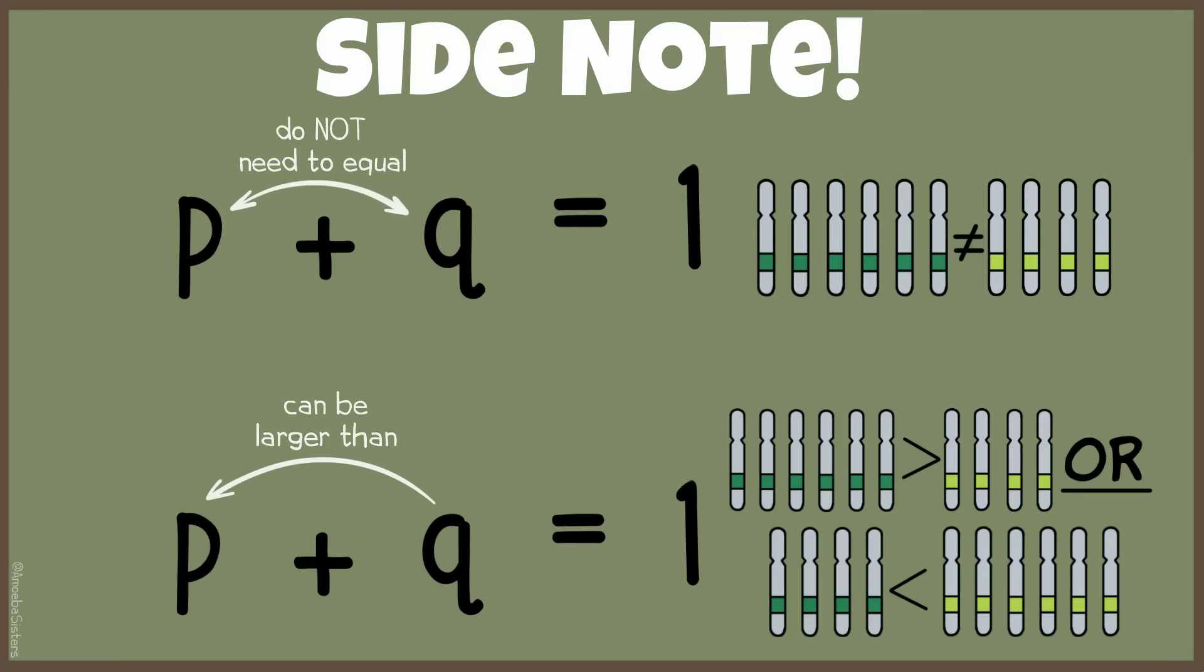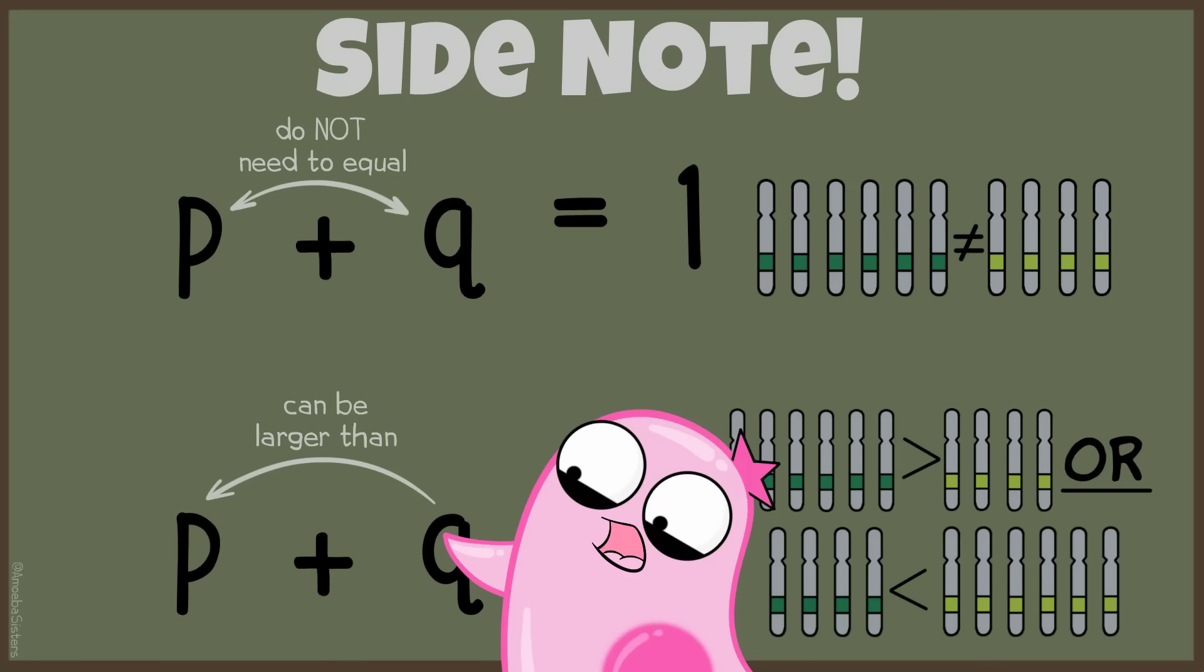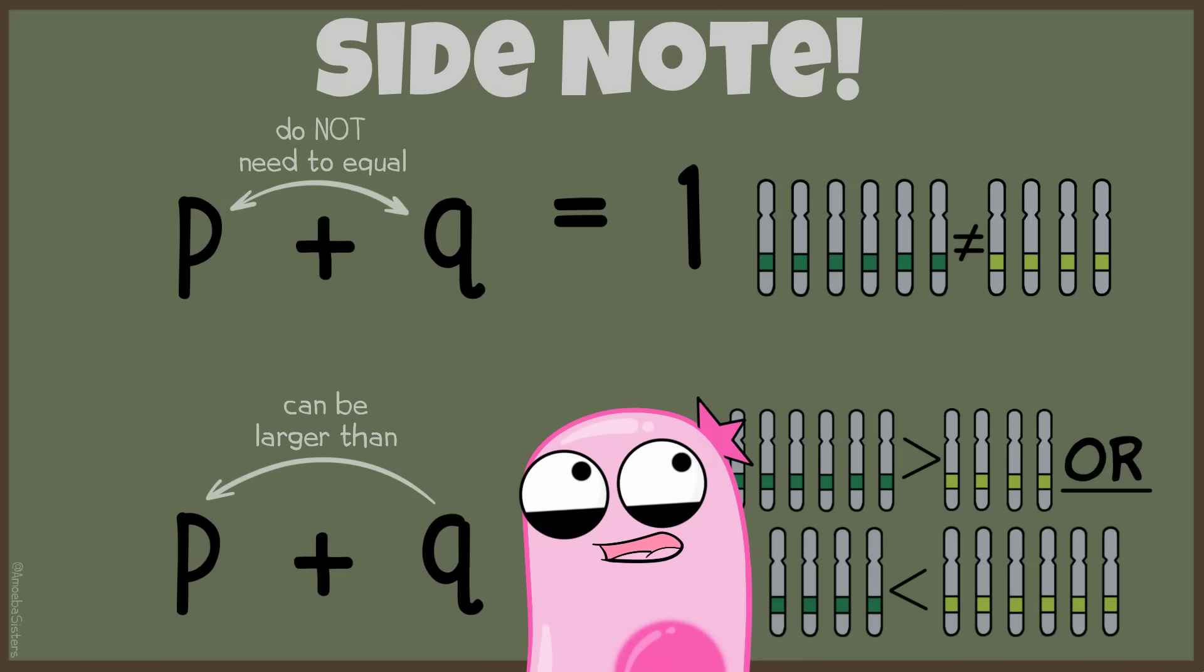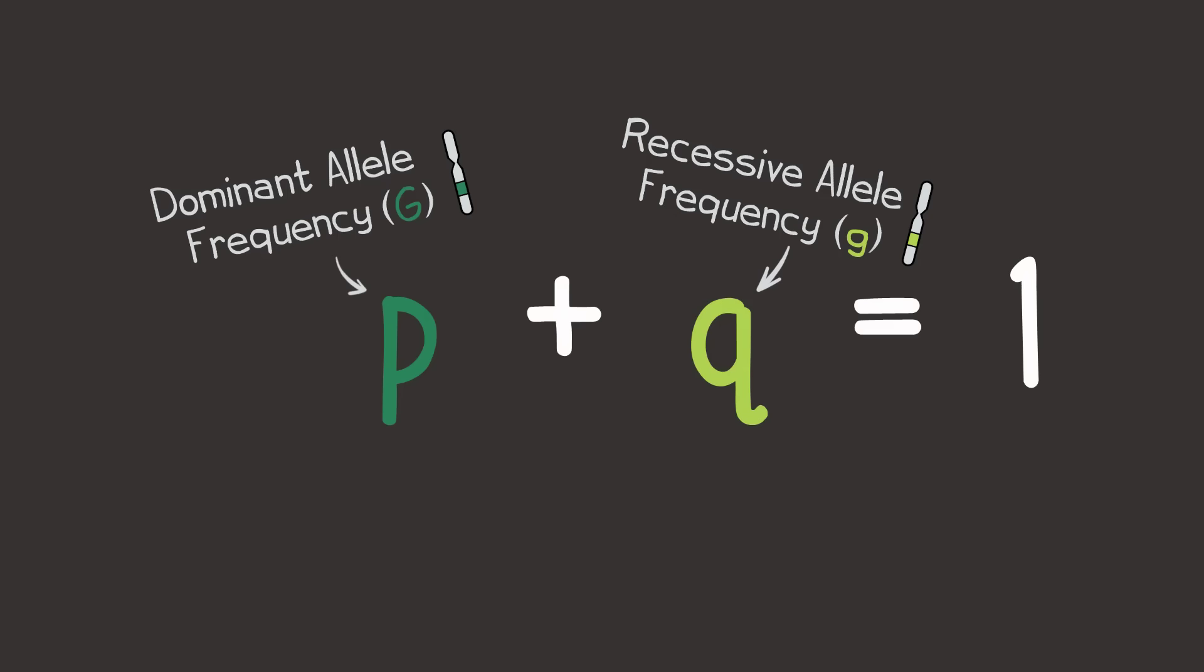And the dominant allele frequency in any population doesn't have to be larger than the recessive allele frequency in a population. That's a misconception because dominant alleles aren't always the more common allele. The equation does say that the dominant allele frequency and the recessive allele frequency have to equal 1. So in my example here, if I say 60% of the alleles are big G, 40% of the alleles are little g, 0.6 is p, and 0.4 is q.